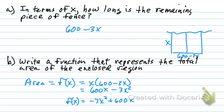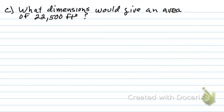That's part B. Let's look at C. I'm going to copy this by the way. Okay, we'll get to see what dimensions would give us an area of 22,500 square feet. There's my formula. So now I know what the area is so I'm going to put in 22,500 equals negative 3X squared plus 600X.